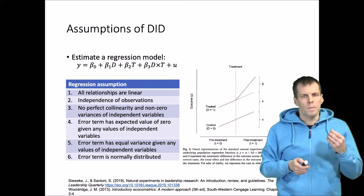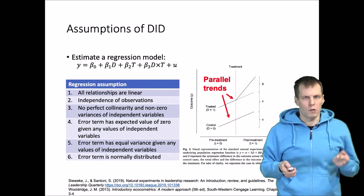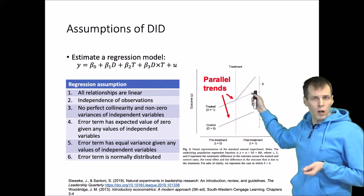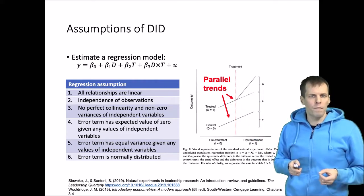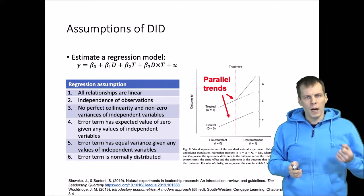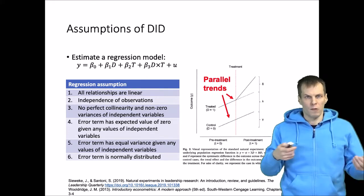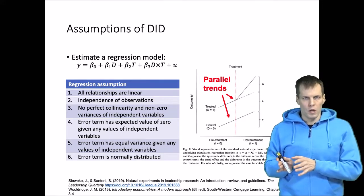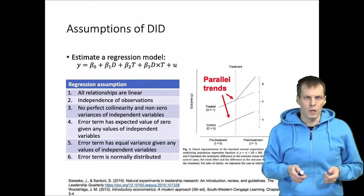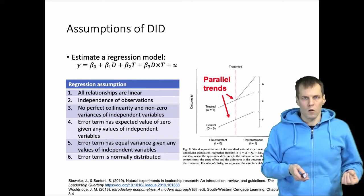When you read about difference in differences, explanations typically mention the parallel trends assumption. The idea is that the control group develops over time and so does the treatment group. For the causal inference to be valid, we must assume the treatment group would have developed the same way as the control group had it not received the treatment. The control group's development is used as a counterfactual. If parallel trends does not hold, estimates will be inconsistent and causal inference will be invalid.